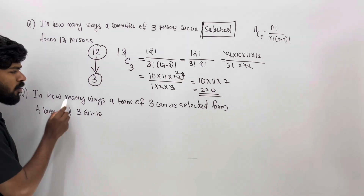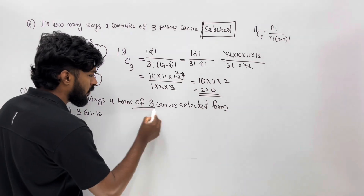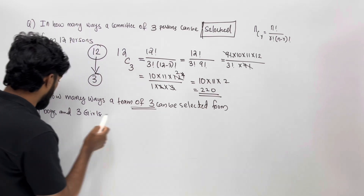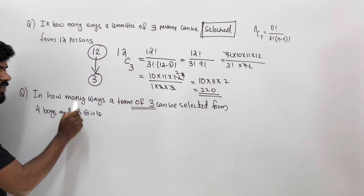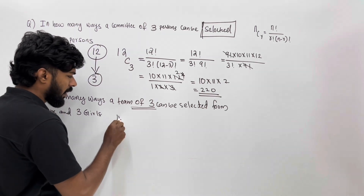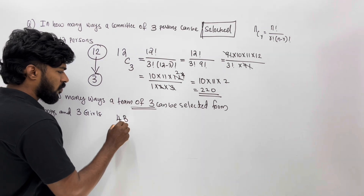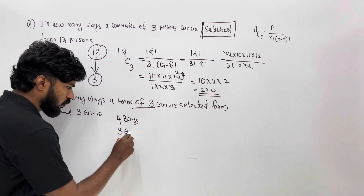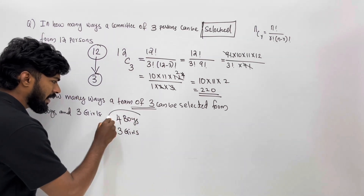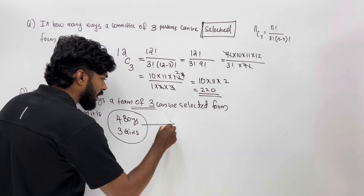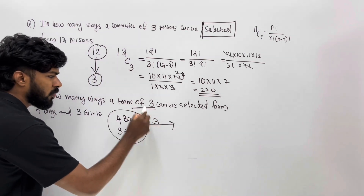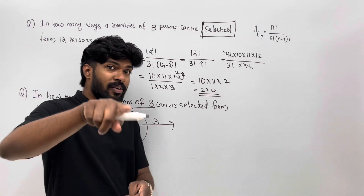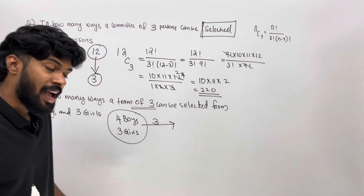In how many ways can a team of three be selected from four boys and three girls? How many boys are there? Four boys. How many girls? Three girls. In this case, how many in the team? Three. That's the answer.